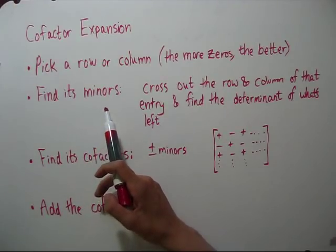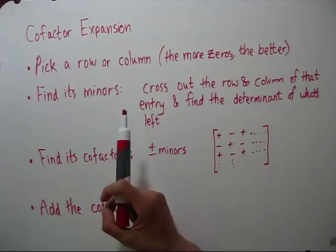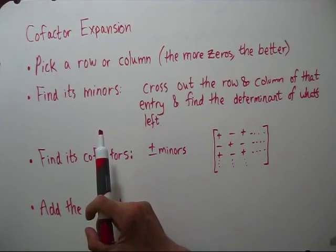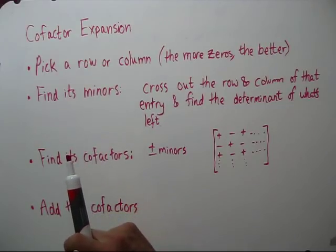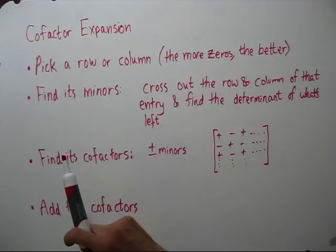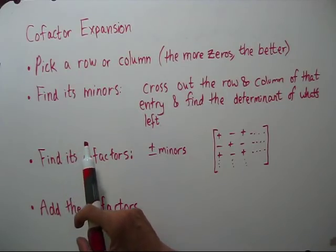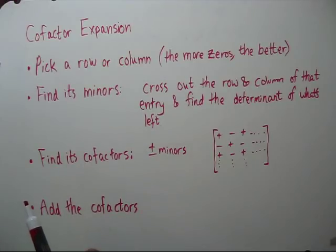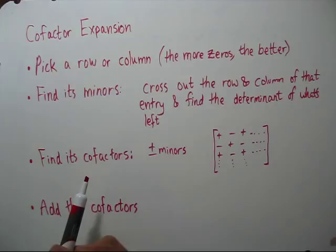Then you're going to find what's called the minors of that row or column. You're going to take each entry of that row or column one by one, and you'll cross out the row and column that that entry is in and find the determinant of what's left.